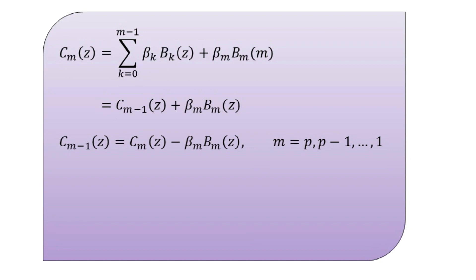Since b_m(m) equals one, the parameters beta_m are determined from the equation: beta_m equals c_m(m), for m equals p, p minus one, p minus two, down to one, and finally zero. This backward recursion generates all the lower-degree polynomials needed.